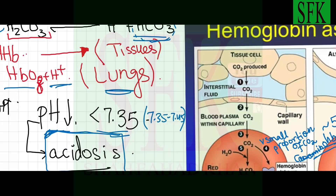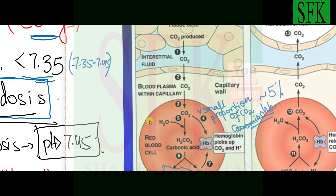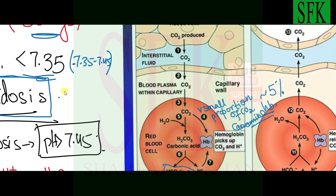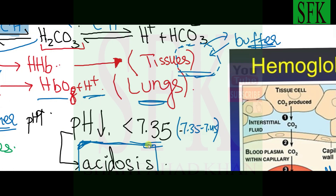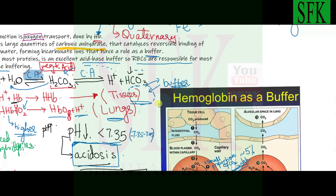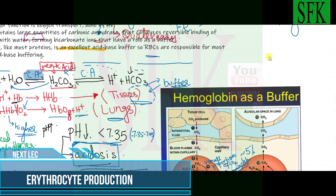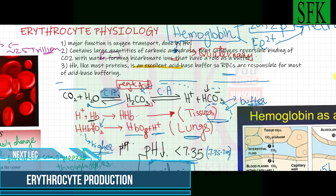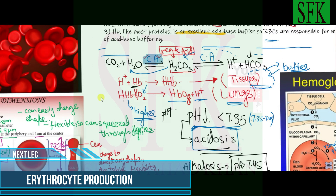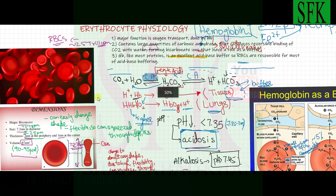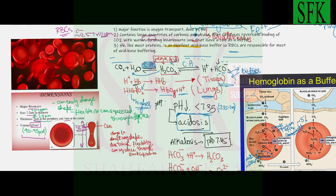So red blood cells help in the transport of both carbon dioxide and oxygen. This was an introduction to erythrocyte functions and hemoglobin's buffering role. In the next lecture, which covers the production and maturation of erythrocytes, the link is in the description — check it out to connect both lectures together.